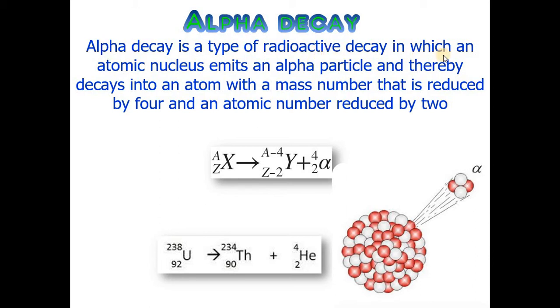An atomic nucleus emits an alpha particle and thereby decays into an atom with a mass number that is reduced by four and an atomic number reduced by two. A general reaction is shown for alpha decay. When a parent nucleus decays into a daughter nucleus, its atomic number decreases by two and atomic mass decreases by four, resulting in the emission of alpha particles.